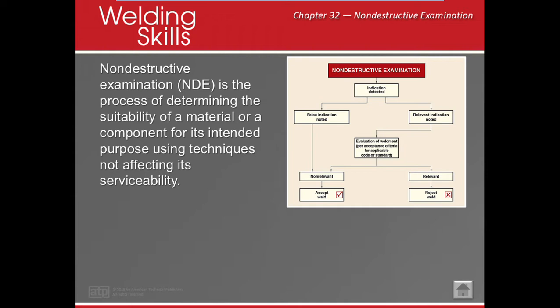An indication can be a false indication — it looked like something but it's not — or a relevant indication, meaning there's something there we need to evaluate against the acceptance criteria of the applicable code or standard. If it's non-relevant, it is less than the criteria and we can accept the weld. But if it exceeds that code or standard, it becomes a defect and rejects the weld.